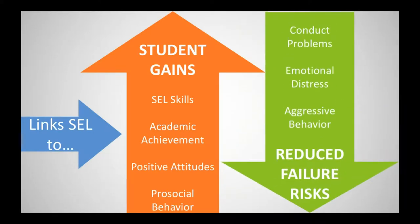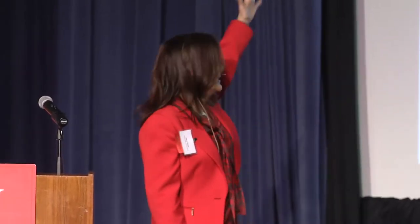Let's talk about the research. I'm going to discuss two meta-analyses about social-emotional learning in schools. The first is from Durlac — a meta-analysis with 213 different schools and almost 300,000 students. He found that students learned the SEL skills, academic achievement went up, positive attitudes increased, and pro-social behavior like caring and sharing increased. Things that went down: conduct problems, aggressive behavior, and emotional distress. By teaching this, we decrease those.